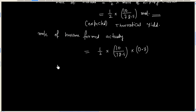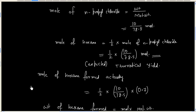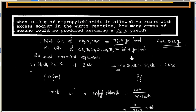Now, we can calculate mass of hexane formed. This is mole times molecular weight. Molecular weight is 86.4.